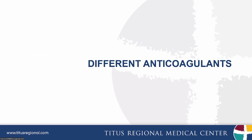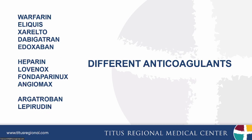What are the different anticoagulants? You have warfarin, which has been around for almost 50 years — essentially rat poison — used for certain disease states. Then for the last 10 years we have newer oral anticoagulants: Eliquis, Xarelto, dabigatran, edoxaban. Then subcutaneous and IV agents: heparin, Lovenox, fondaparinux, Angiomax, argatroban, lepirudin. If you come across these names, this list tells you they are anticoagulants and not antiplatelets, because they all work differently.